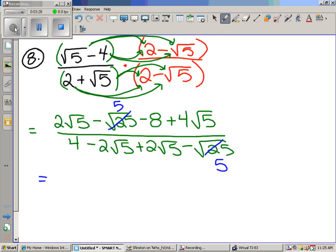In the denominator, negative two radical five and positive two radical five just cross out. Let's take care of the top. Two radical five plus four radical five is six radical five. Negative five minus eight is negative 13, all over four minus five, negative one.